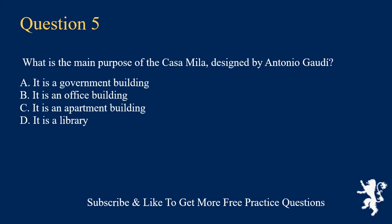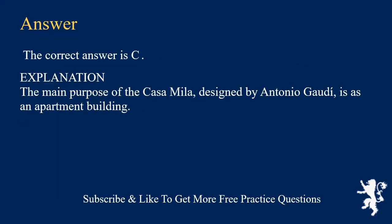What is the main purpose of the Casa Mila, designed by Antonio Gaudí? A. It is a government building. B. It is an office building. C. It is an apartment building. D. It is a library. The correct answer is C.